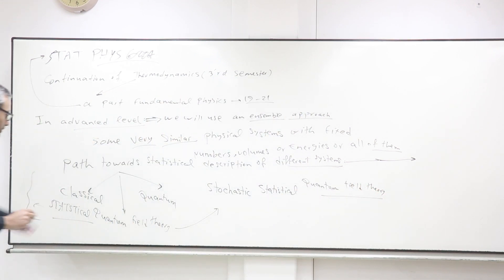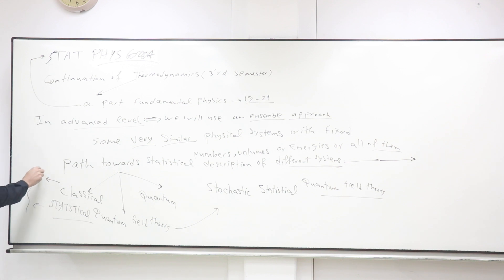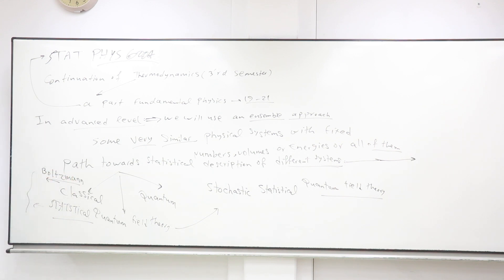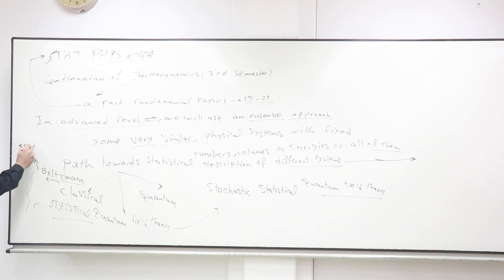I will tell you who developed each one. Classical statistical mechanics is mainly credited to Boltzmann — a man who sacrificed everything. He spent all of his life to solve what we call the ergodic theory. And finally, because he didn't find any results, he ended his life tragically.